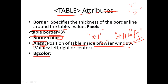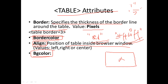The BG color attribute is used to set the background color of the table. We use the table to set the background color using the BG color attribute. Color can be specified in two ways: by color name or by hexadecimal value.